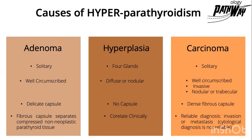The adenoma is surrounded by a delicate capsule; hyperplasia has no capsule; and in carcinoma, there can be a dense fibrous capsule. In the adenoma, we will find compressed normal parathyroid tissue caused by the adenoma. In hyperplasia, we need to correlate clinically to determine whether the hyperdense tissue represents primary, secondary, or tertiary hyperplasia, or an adenoma. If it affects one gland, we call it adenoma; if it affects four glands, it goes more with hyperplasia.